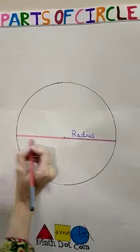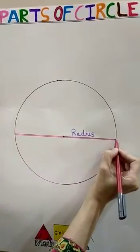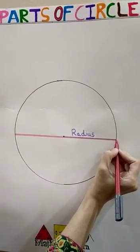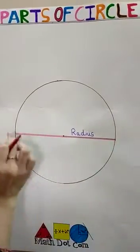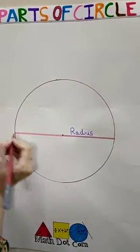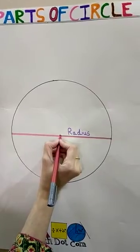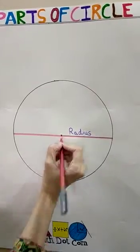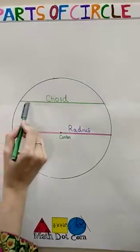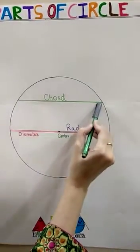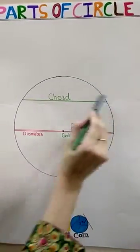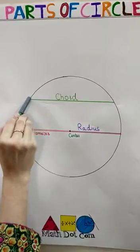This red line is the diameter of the circle — it touches two ends of the circle and it must pass through the center of the circle. This is the chord of the circle, which also touches two ends of the circle.